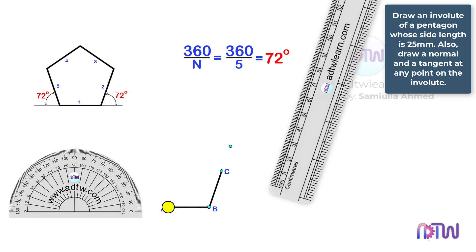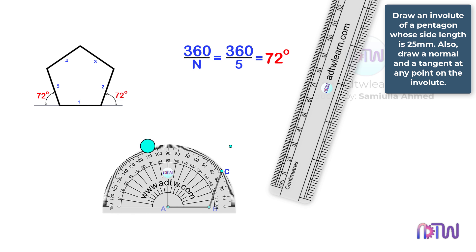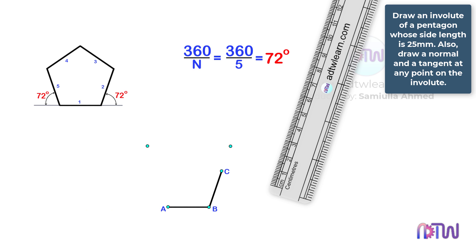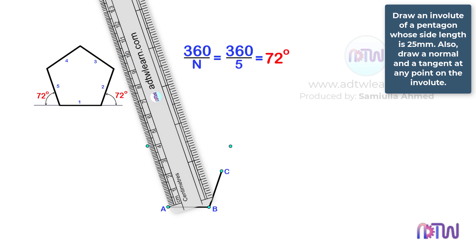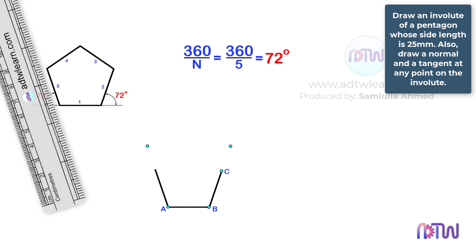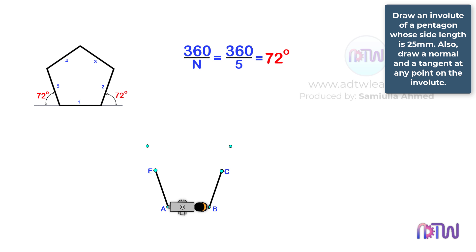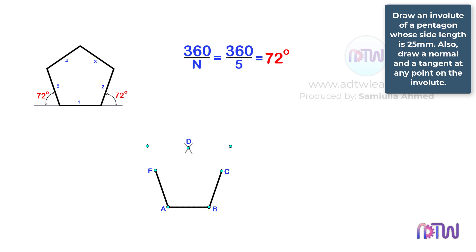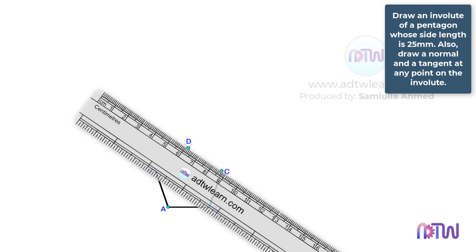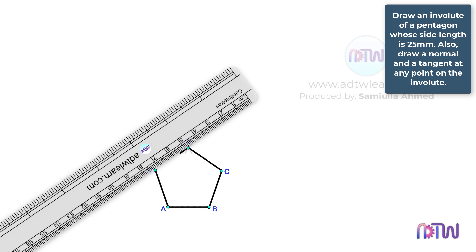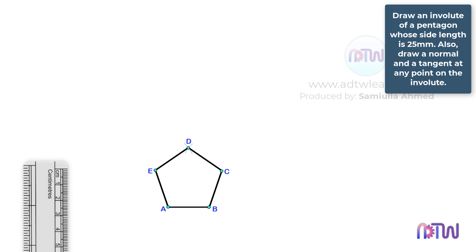Next, keep the protractor at this point and mark a point at 72 degrees. Take a ruler and, using this point as a reference, draw a line of length 25 mm. Label this point as E. After this, take a compass, adjust it to length A-B, and using points C and E as a center, cut an arc as shown. This is our required pentagon.